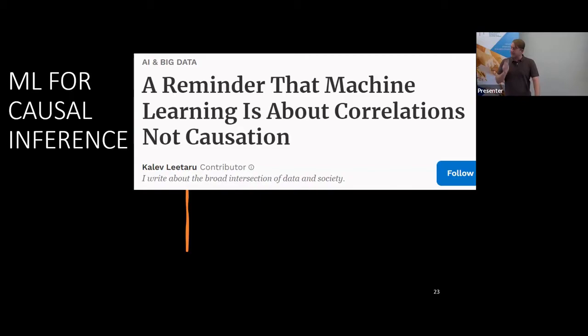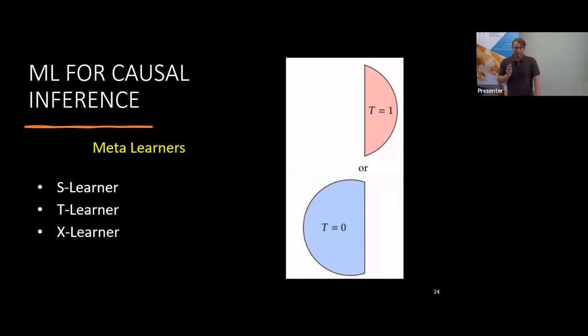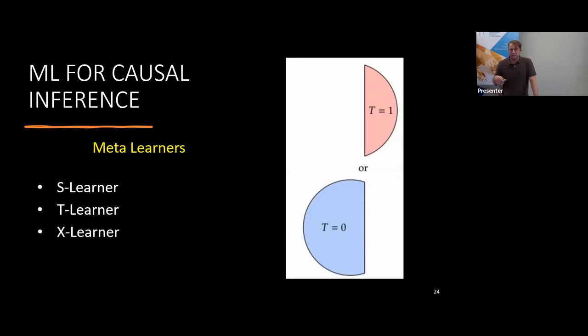Machine learning is about correlations, not causation. Machine learning is excellent at predictions — it can use non-linear neural functions from neural networks to make good predictions — but you cannot assume causation from a machine learning model. There are three specific types of machine learning applied to causal inference that I'd like to mention; these are called meta-learners. In an observational study, you have a group that took the treatment and a group that didn't, and they're not necessarily statistically the same.